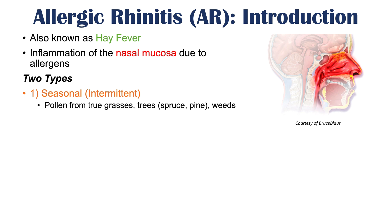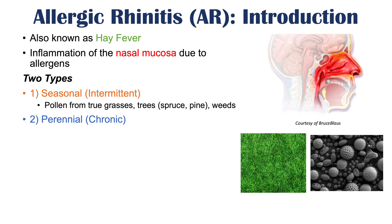Seasonal allergic rhinitis occurs when certain plants pollinate at certain times of the year. These pollens usually include true grasses, certain trees like spruce and pine, and certain weeds. The second type is known as perennial or chronic, which occurs throughout the year when exposures are persistent. These might include mold spores, dust mites, and animal dander.